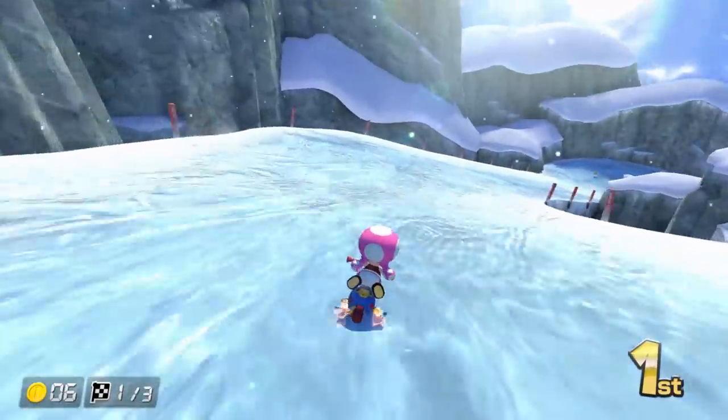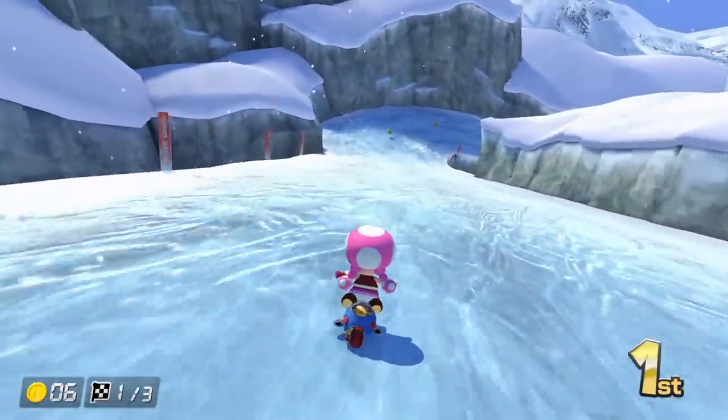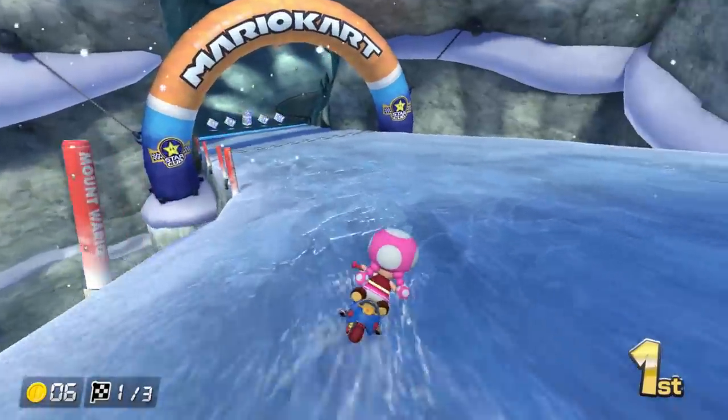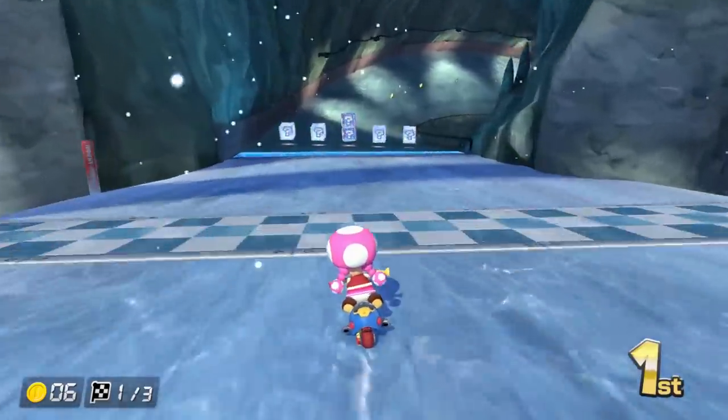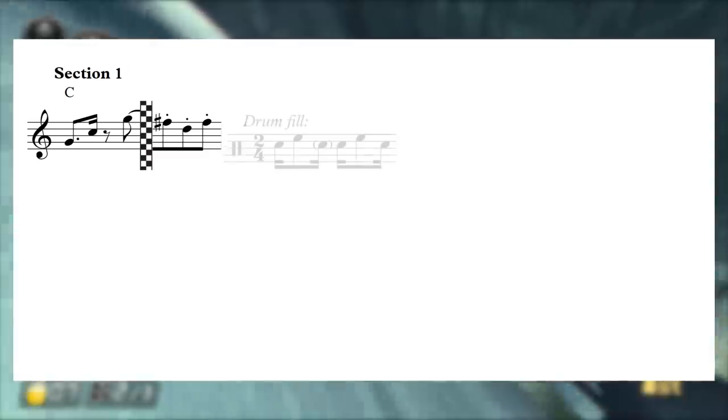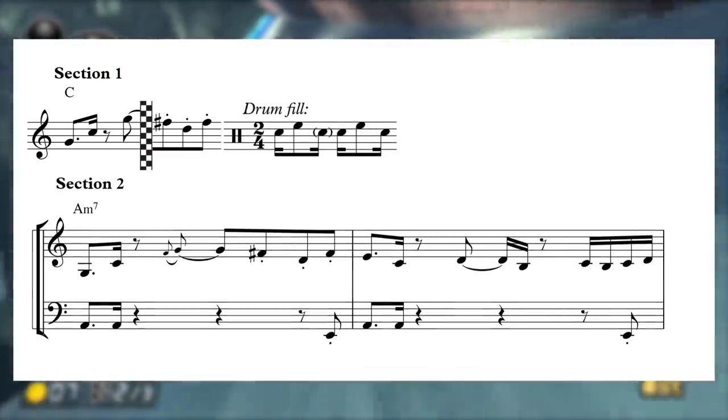This section loops back to the start of the violin melody and continues looping until the player reaches the second phase of the race. When the player does reach the second stage by crossing the entrance to this cavern inside the mountain, the music finishes out whatever bar it was on and then cues a two beat drum fill to lead into the second section of the piece.